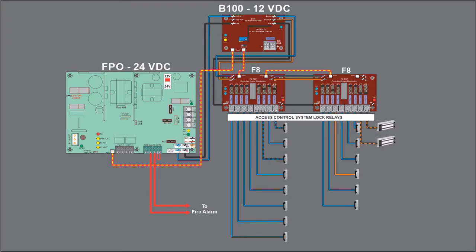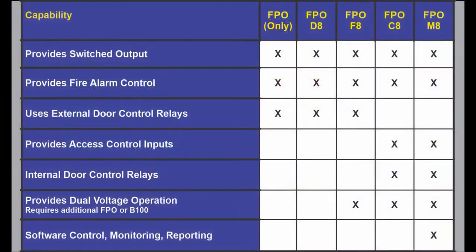The F8 will also allow the use of 12 or 24 volt locks wherever needed. The next combination is the FPO C8.